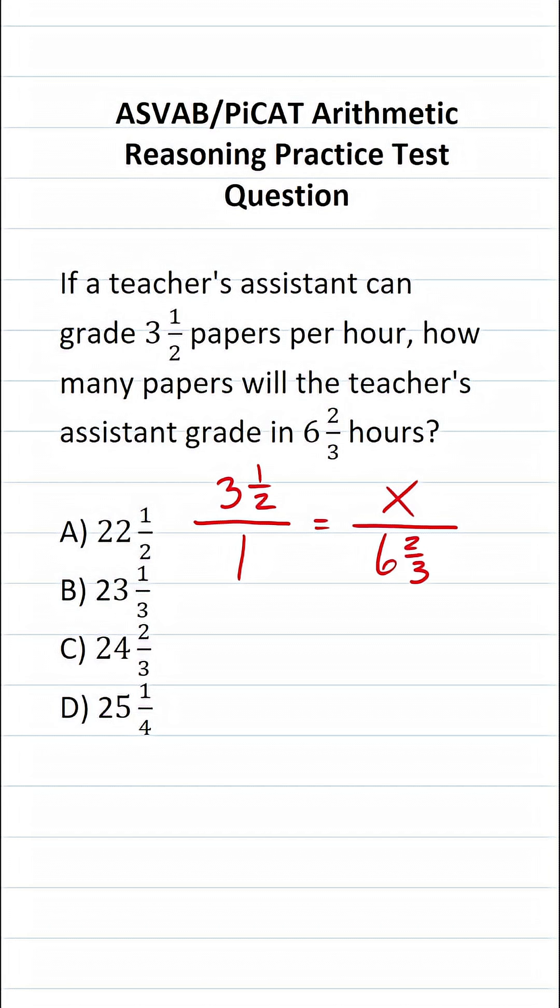You solve proportions, you may recall, via cross multiplication. So one times X is X, and then we have three and a half times six and two thirds.